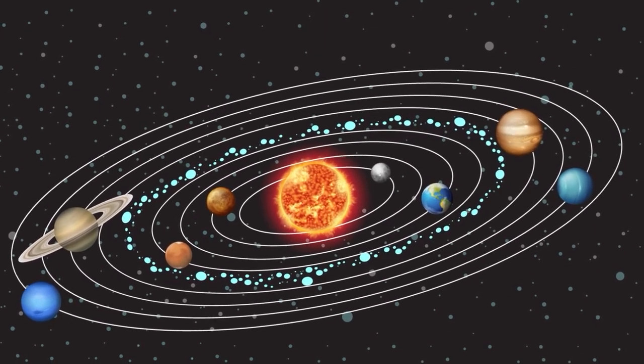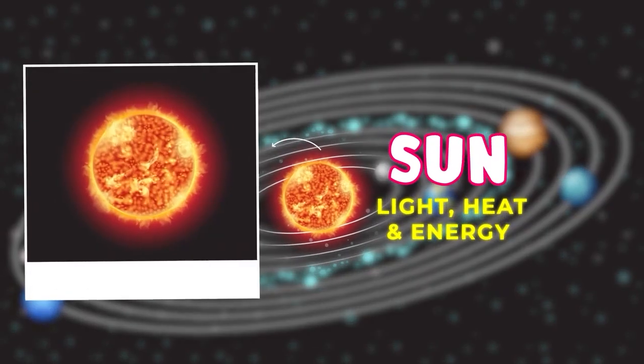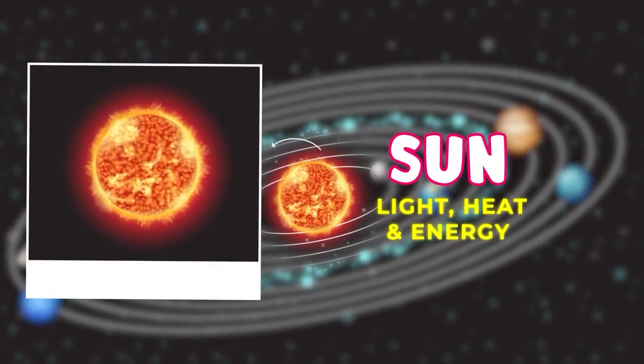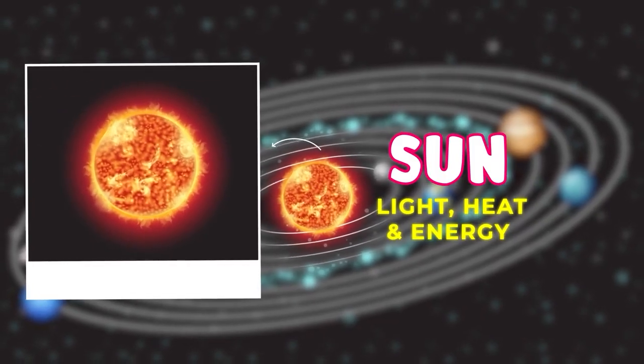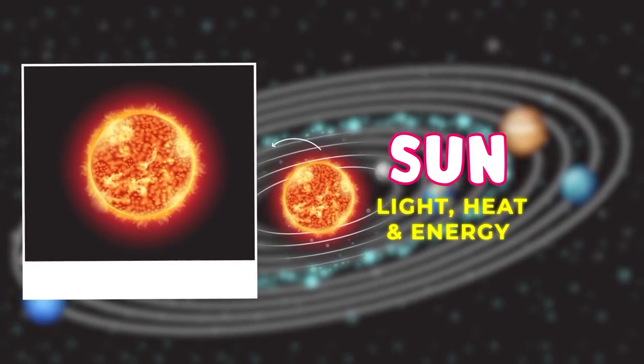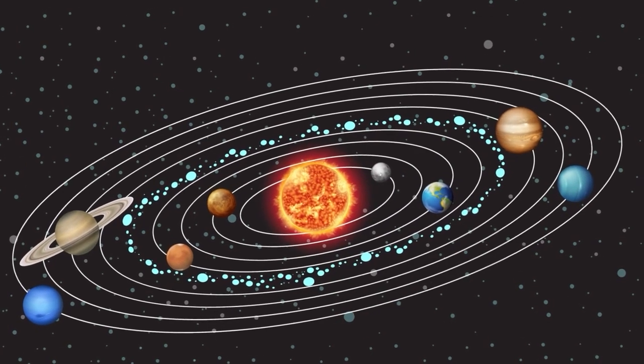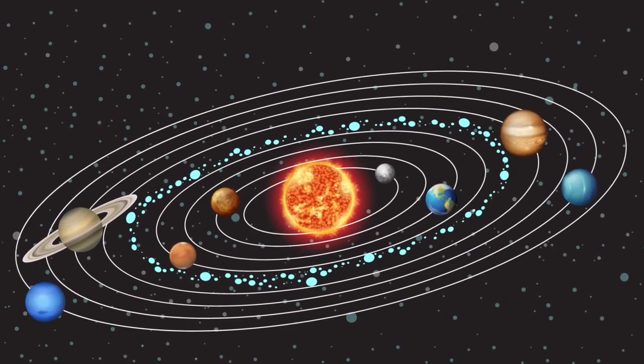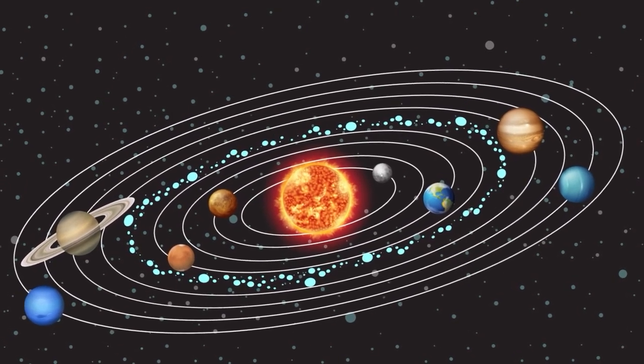Our solar system is like a big neighborhood in space, and it has one big star right in the middle. That's the sun. The sun is super important because it gives us light, heat and energy. Around the sun, there are eight planets, and each one is different and unique. Let's take a closer look at these awesome planets.